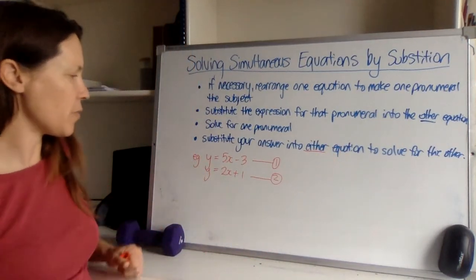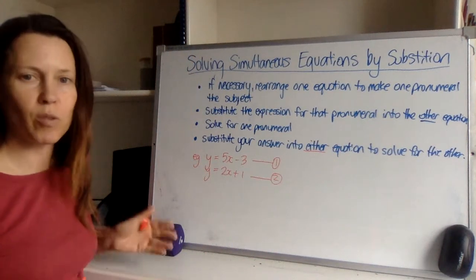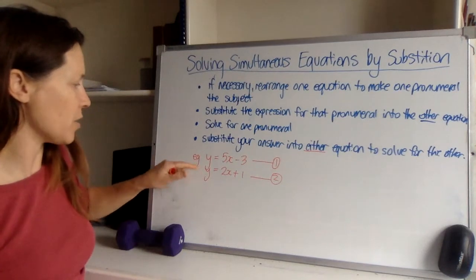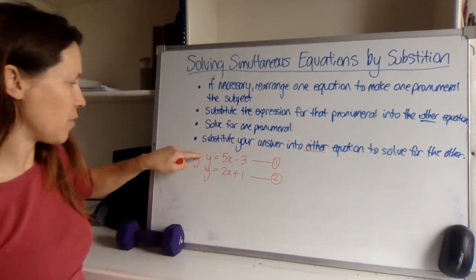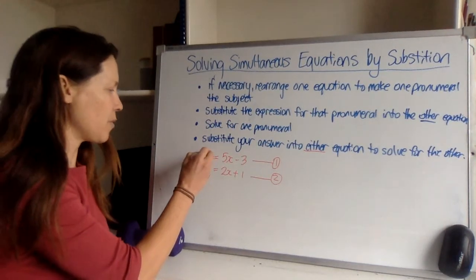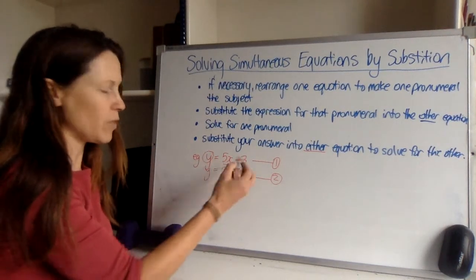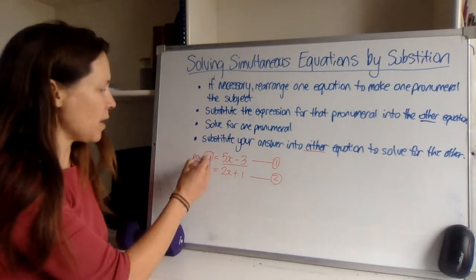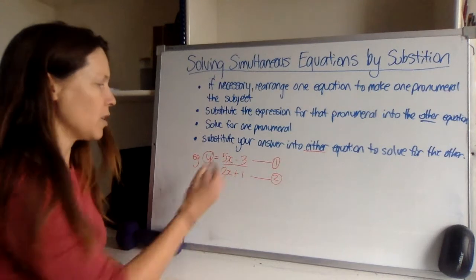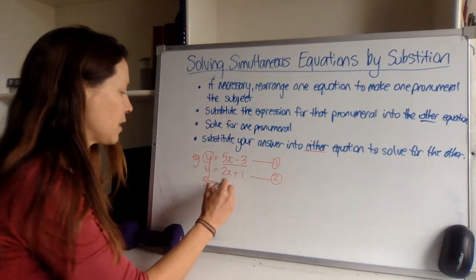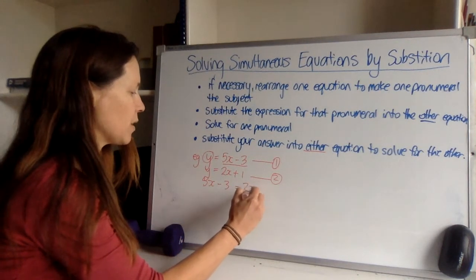This first example is quite straightforward because we've already got both equations having one pronumeral just sitting there on its own. So I can take this first y and say from this equation I can see that y is equal to 5x minus 3. So if y is equal to 5x minus 3 but it's also equal to 2x plus 1, surely the 5x minus 3 is equal to the 2x plus 1.